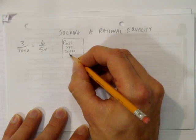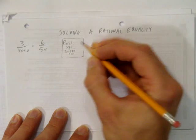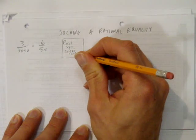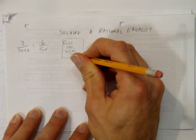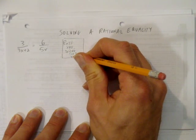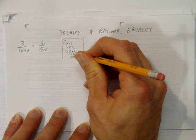Take away 2 from both sides, and we get 3x cannot equal negative 2. In other words, x cannot equal negative 2 over 3. There's our two restrictions.